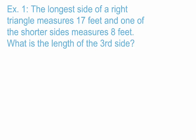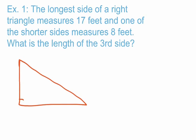The orientation of our right triangle doesn't really matter, so I'm going to draw a right triangle. Remember, we need to put the square in the corner to represent the right angle. The hypotenuse is 17 feet — that's the side not forming the right angle, the longest side — so that's our 17-foot side. I'll also label the 8-foot length on one of the legs. The missing side I'm trying to find is the other leg, and I'll label that B.